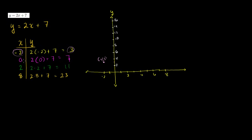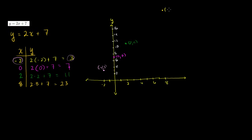Our next point is (0, 7): x is 0, y is 7, right there. Then we have (2, 11), which would be right about there. And then this last point, 8 comma 23, is going to fall way off my graph — up here someplace. This is 8, 23.